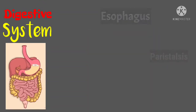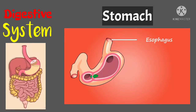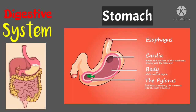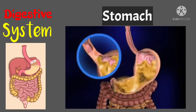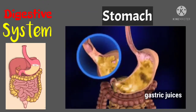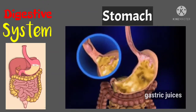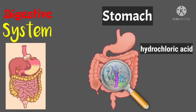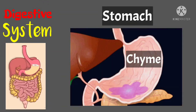Next is the stomach. The stomach is a J-shaped muscular bag that stores food and breaks it down into tiny pieces. It mixes food with gastric juices that contain enzymes to break down proteins and lipids. Hydrochloric acid in the stomach kills bacteria. Food found in the stomach is called chyme.